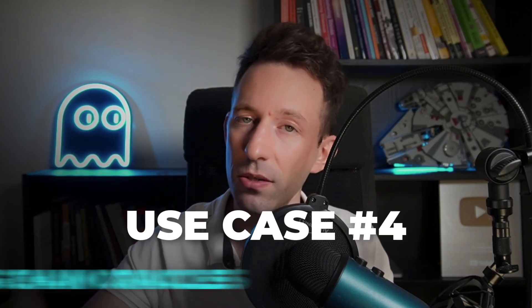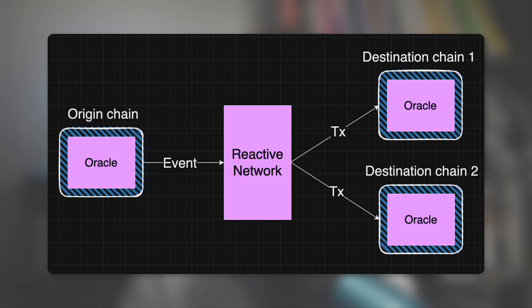The last use case is cross-chain oracles. With Reactive smart contracts, you can implement a cross-chain oracle system that seamlessly brings data from an oracle on one chain to an oracle on another. This is very helpful when you are developing on chains that don't have oracles yet. And this is just the beginning — Reactive smart contracts will unlock many other use cases.